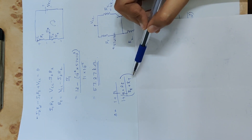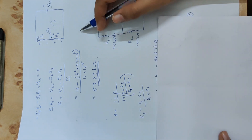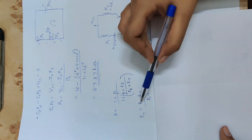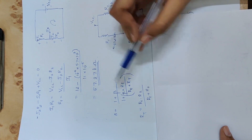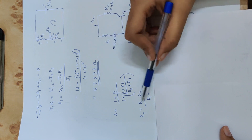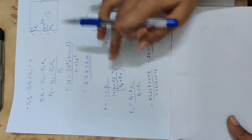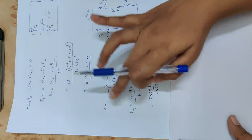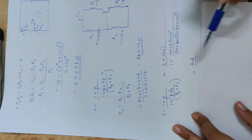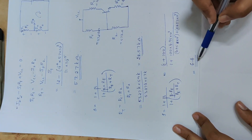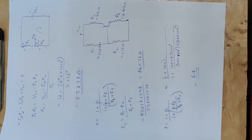For the stability factor, we use RT equation: RT equals R1·R2 divided by (R1 plus R2). Using the calculated values of R1 and R2, we compute RT and then use it to calculate the stability factor.